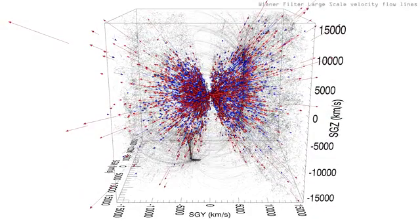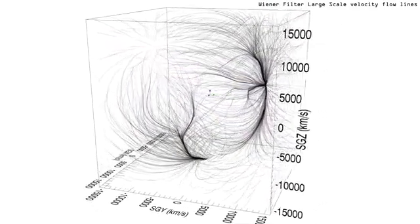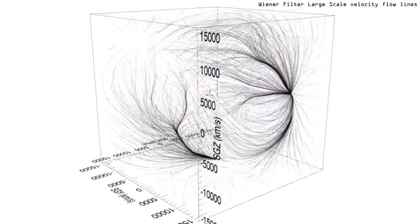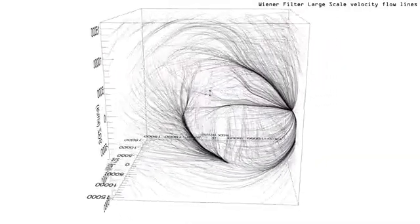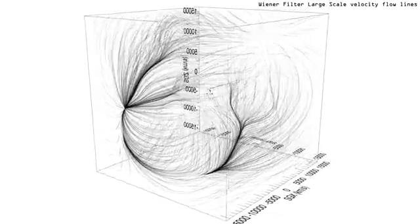The scene now transitions to peculiar velocity flow lines derived from a Wiener filter analysis of the Cosmic flows' two peculiar velocity field. Our galaxy is located at the origin indicated by the three central colored directional vectors.